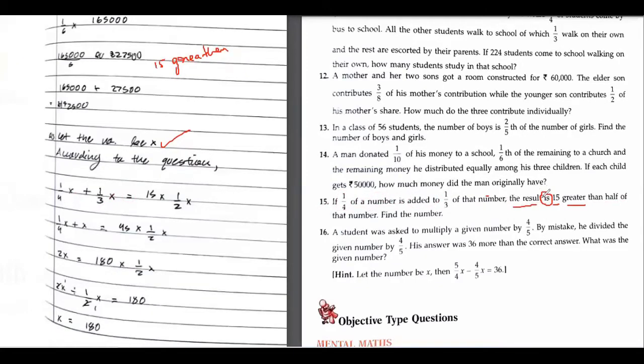They are saying the result is 15 greater than half of the number. So this should be half of the number, this should be half of the number plus 15. Okay, so I've done it that way and then it becomes - if we take the LCM, then it comes 7 upon 12. 7 upon 12x equals to 15 half upon x.